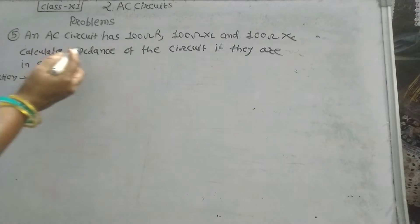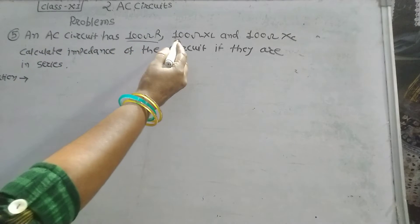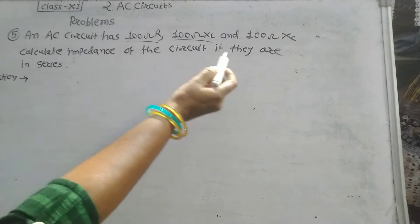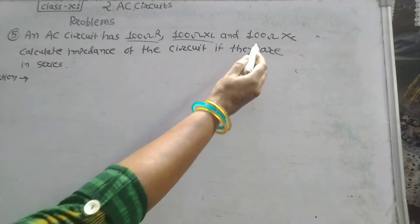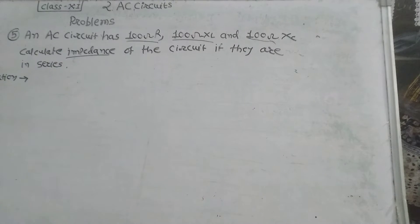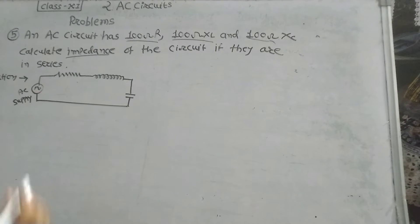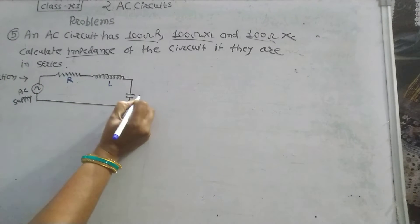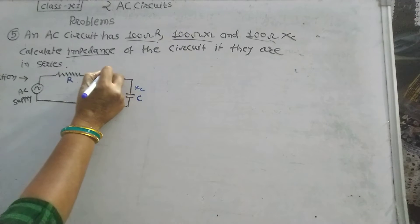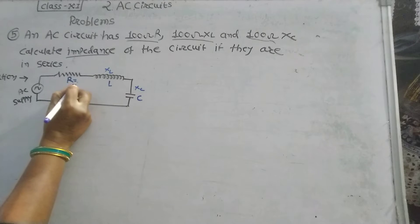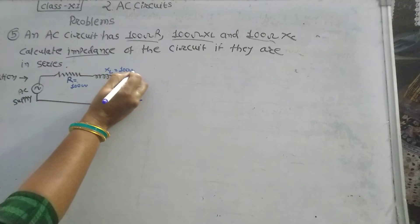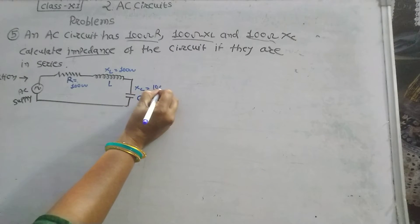Question 5: An AC circuit has 100 ohm resistance, 100 ohm inductive reactance, and 100 ohm capacitive reactance. Calculate the impedance of the circuit if they are in series. The circuit has resistance, inductor, and capacitor in series. Resistance is 100 ohm, XL is 100 ohm, and XC is 100 ohm.